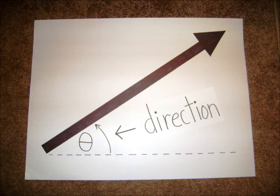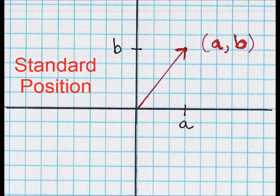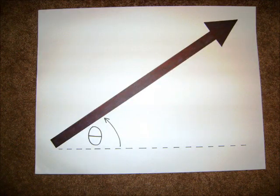A vector is a directed line segment. Use an arrow to show the way it went. Its length is called its norm. Standard positions when it's drawn, emanating from the origin.